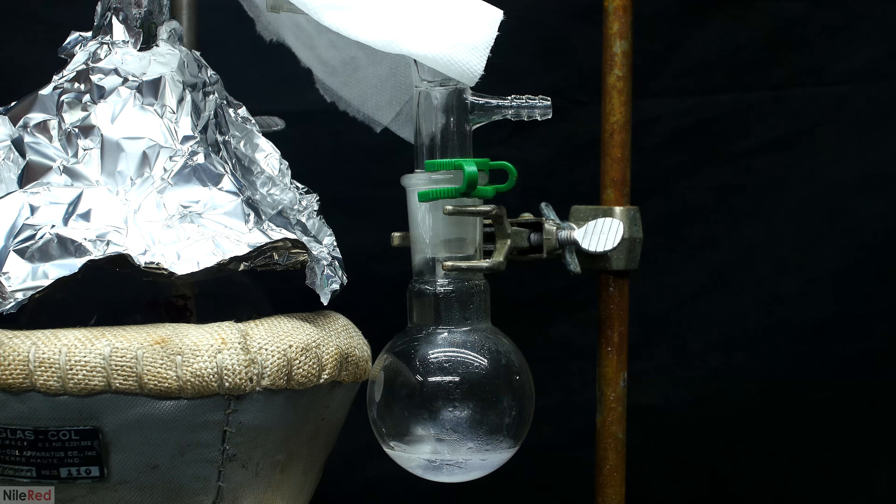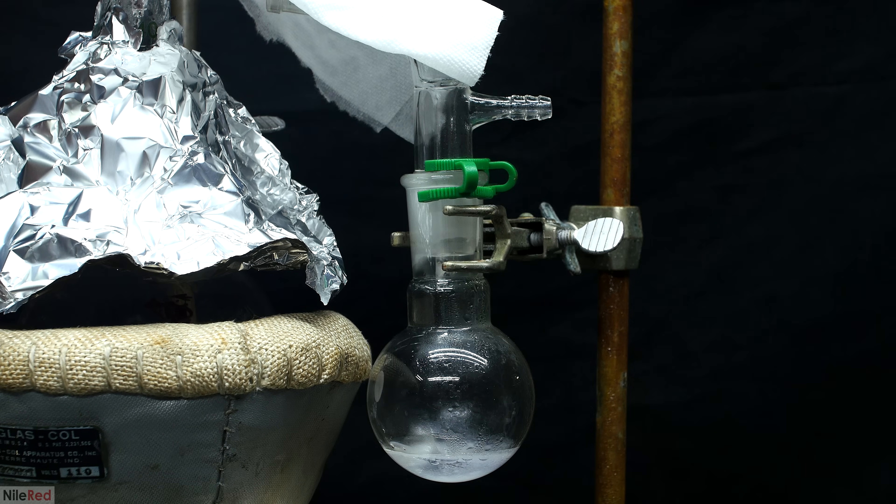The boiling point of phenol is 181.7. We want to collect everything that comes at and below this temperature, and once the temperature starts to rise above this, the distillation is stopped.